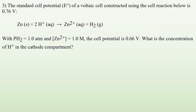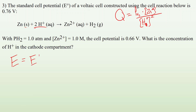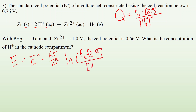Number three: the standard cell potential of a voltaic cell constructed using the reaction below is 0.76 volts. With a pressure of H2 at one atmosphere and a Zn²⁺ molar concentration given, the cell potential is 0.66 volts. What is the concentration of H⁺? I need to figure out my Q expression: the pressure of H2 times the concentration of Zn²⁺, all over H⁺ concentration squared — since H⁺ appears twice in the reactants. Zn solid is not part of it. So going back to the Nernst equation: E equals E-naught minus RT over NF times the natural log of Q, where Q is PH₂ times [Zn²⁺] all over [H⁺]². I'm trying to get H⁺, so I have to do a little algebra — first, get the E terms on one side and the natural log on the other.